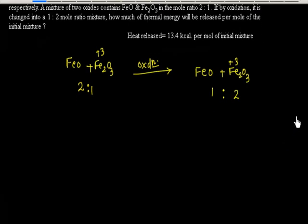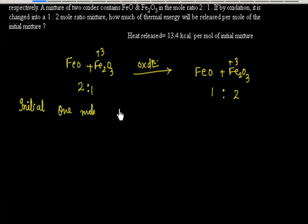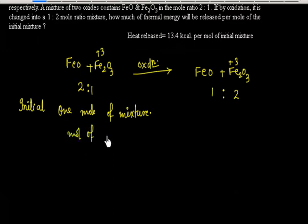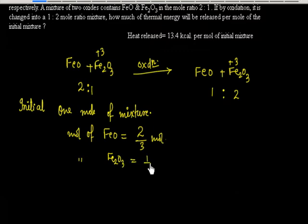Let us take the initial mixture as 1 mole. With a 2:1 ratio, the mole of FeO is 2/3 mole, and the mole of Fe2O3 is 1/3 mole.